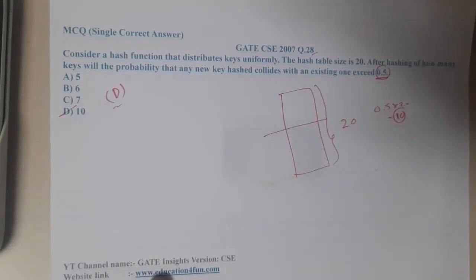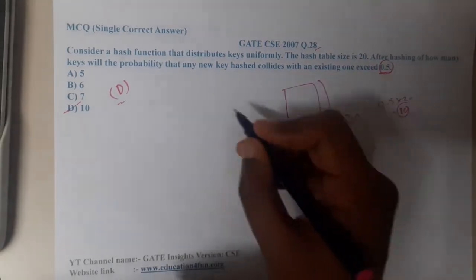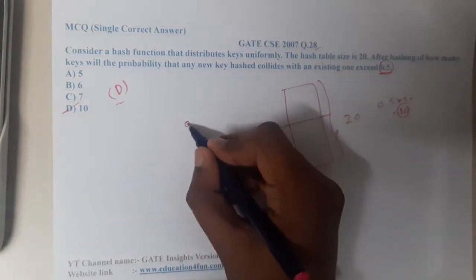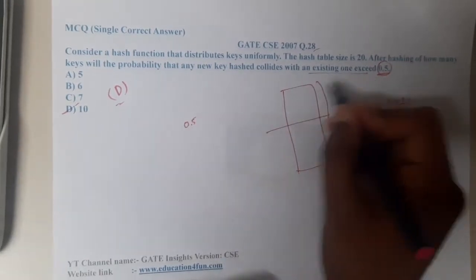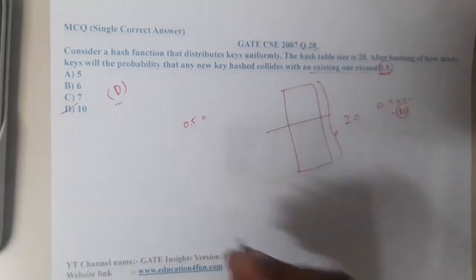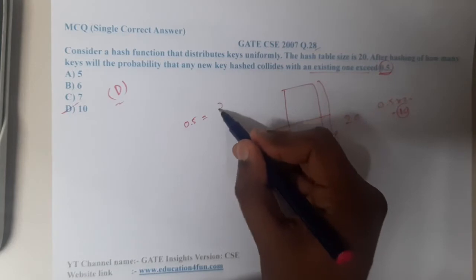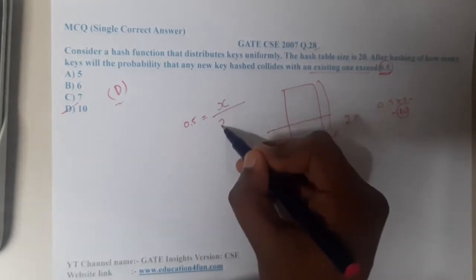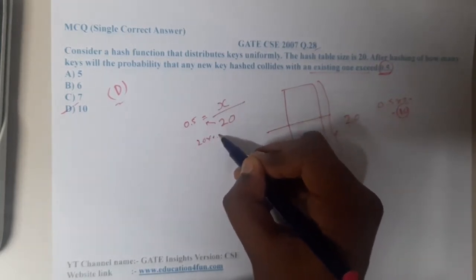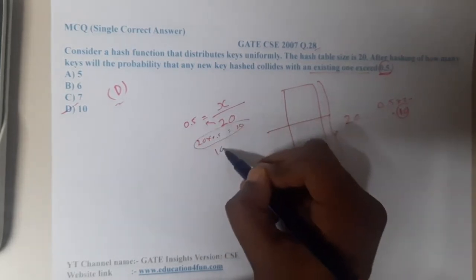But some might be saying we want to do it with respect to probability. So what is the probability? The result is 0.5 they gave, the existing probability. They want to find how many elements will be filled. The total number of elements is 20, so if you multiply 20 into 0.5, that's the exact formula.